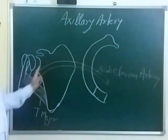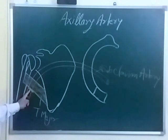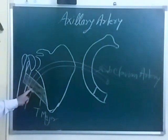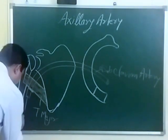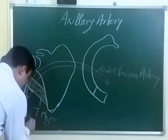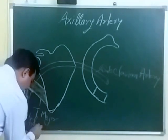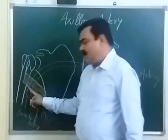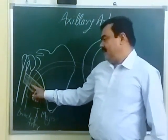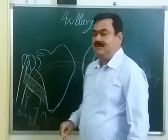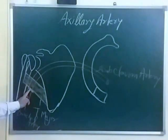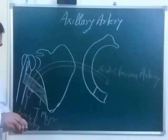From below the teres major it continues as the brachial artery. So the axillary artery is a continuation of the subclavian artery and continues below the lower border of teres major as the brachial artery. The axillary artery extends from the outer border of the first rib to the lower border of teres major.